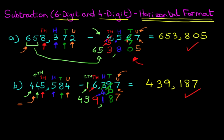Now this looks a little bit messy, however it is a logical process. With a bit of practice you won't even need to do any of the working — you'll go straight from the question to the answer. So that is how we subtract a 6-digit number and a 4-digit number using the horizontal format. Thank you.